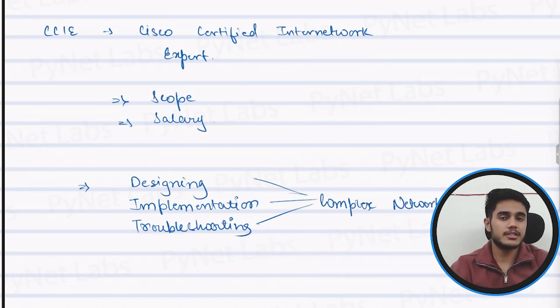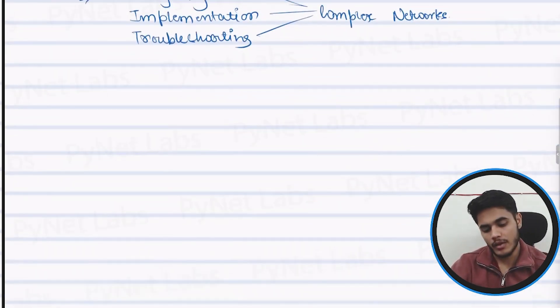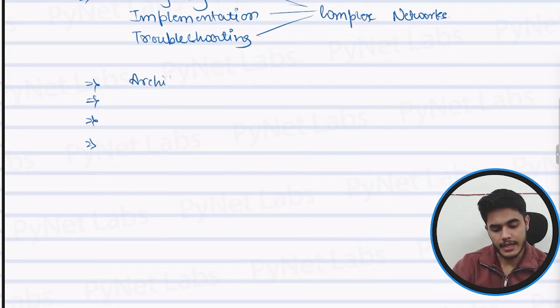So if you have got a CCIE certification, that means you have a validation that you can design, implement, and troubleshoot complex networks. The scope of CCIE is quite vast. If I talk about it, it can include various factors like architecture and design.